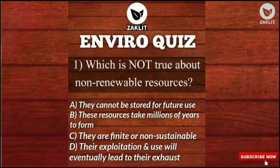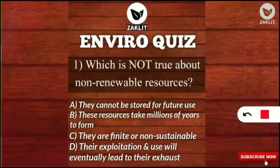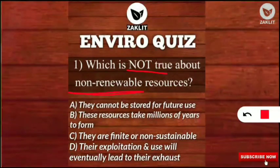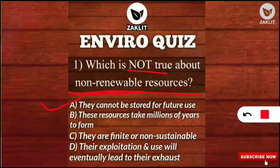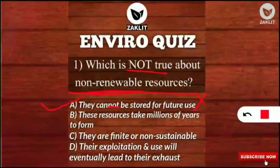The first question asks which is not true about non-renewable resources. This question was a bit complicated — it is asking which is false about non-renewable resources. The correct option is option A: 'they cannot be stored for future use' — this is not true about non-renewable resources, because non-renewable resources can in fact be stored for future use.